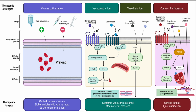Treatment is divided into volume optimization, vasoconstriction/vasodilation, and increasing contractility. For volume: give fluids if hypovolemic, give diuretics if hypervolemic. Vasoconstrictors include norepinephrine, epinephrine, and vasopressin, which act on the endothelium. Vasodilators include nitroprusside and nitroglycerine, acting via cyclic GMP. Contractility is improved by dobutamine, epinephrine, milrinone, and levosimendan, which act on cardiac cells.